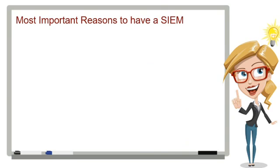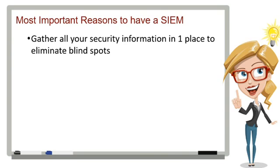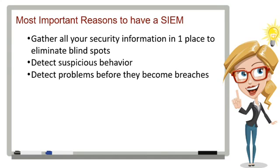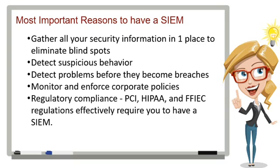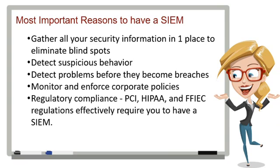There are many important reasons you need to have a SIEM. First, to eliminate blind spots, you need to gather all your security and event information into a single location. Detect suspicious behavior without getting bogged down in false positives. Accurate analysis and correlation allow you to detect problems before they become a breach. Holistic visibility through a SIEM allows you to monitor and enforce corporate policies. Lastly, regulatory requirements including PCI, HIPAA, and FFIEC effectively require you to have a SIEM. A SIEM is a needed tool for both best practices as well as regulatory compliance.